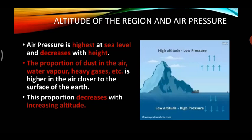Next is the relationship between altitude of the region and air pressure. Altitude means height. Air pressure is highest at sea level and decreases with height — as you go higher, the air pressure becomes lower. The earth's surface at sea level experiences high air pressure and as we go up, the pressure of air goes on decreasing.